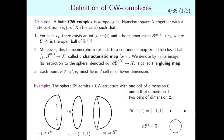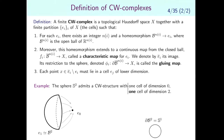For example, the 2-sphere can be partitioned into four cells: one 0-cell (a point), one 1-cell to form a circle, and then two disks glued via a map from the boundary of the disk to the circle. You get the sphere at the end. Actually, you can find a CW structure on the sphere with only two cells: one point and one disk glued to it.